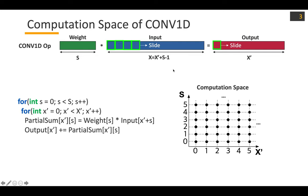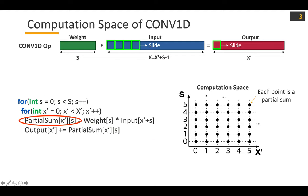We can construct the computation space based on this loop nest. The y-axis and x-axis have loop iterators, and because the partial sum has exactly the same coordinate as the loop iterators, each point in this computation space is a partial sum.